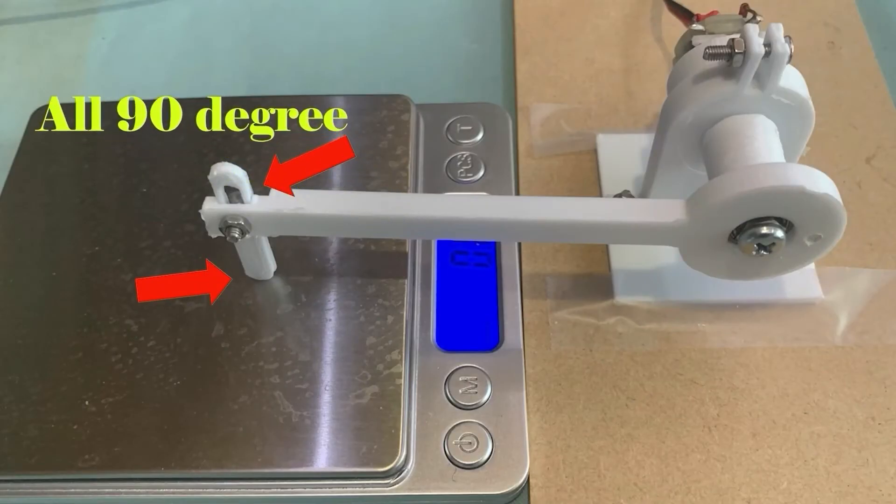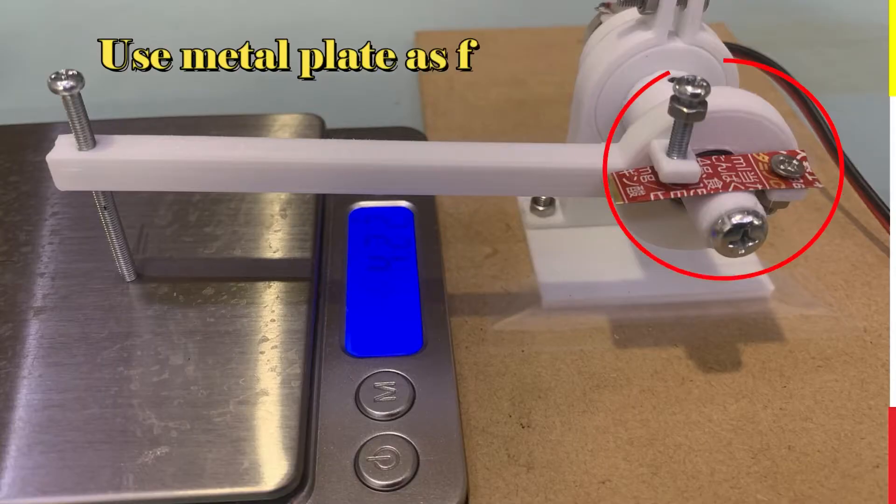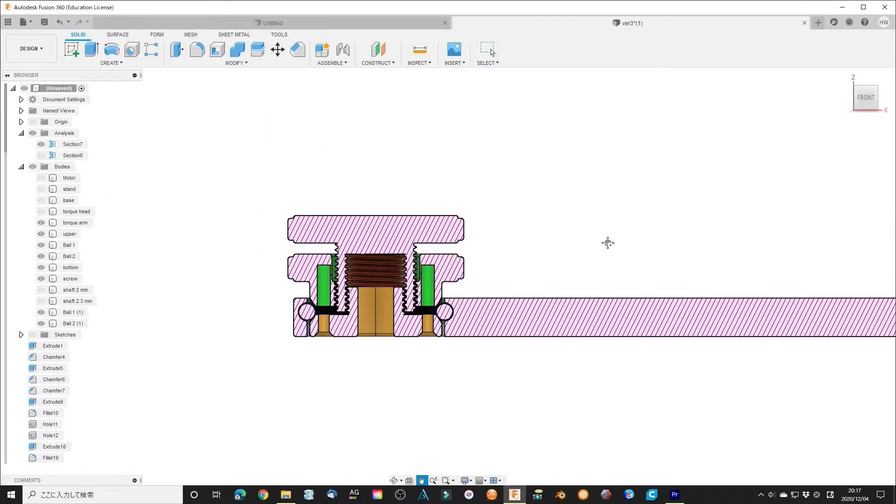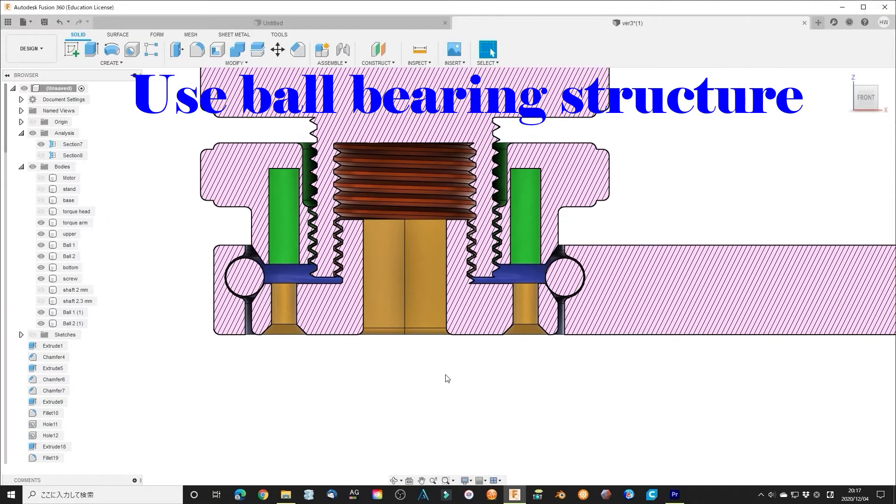The old version uses a metal plate as a friction force source. This time, I will use a ball bearing structure as a friction force.